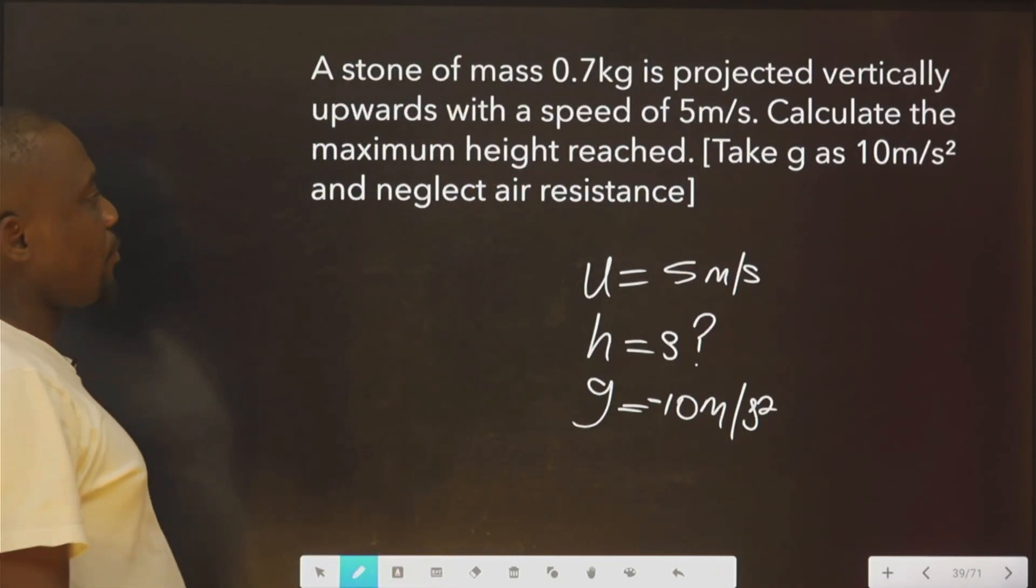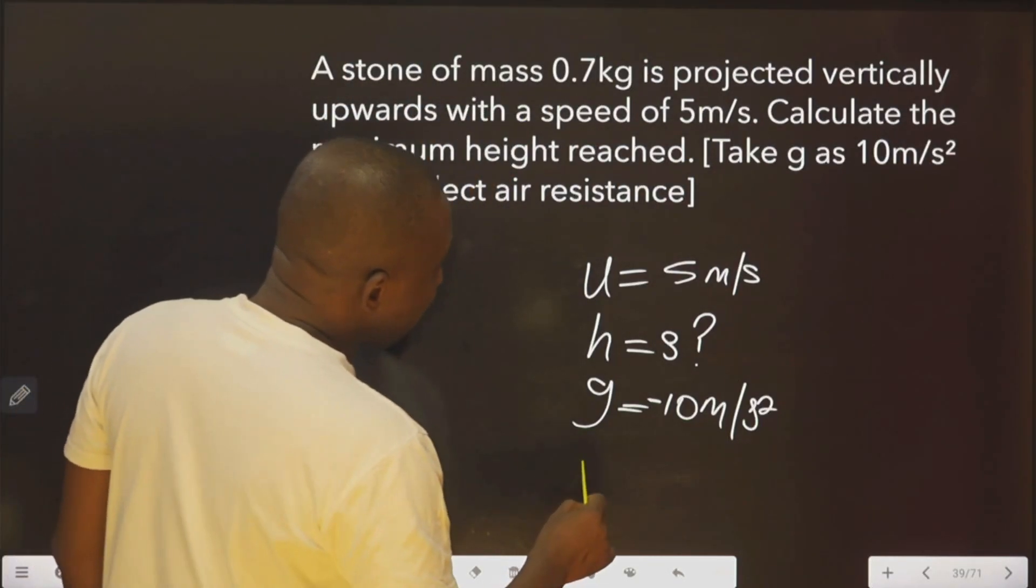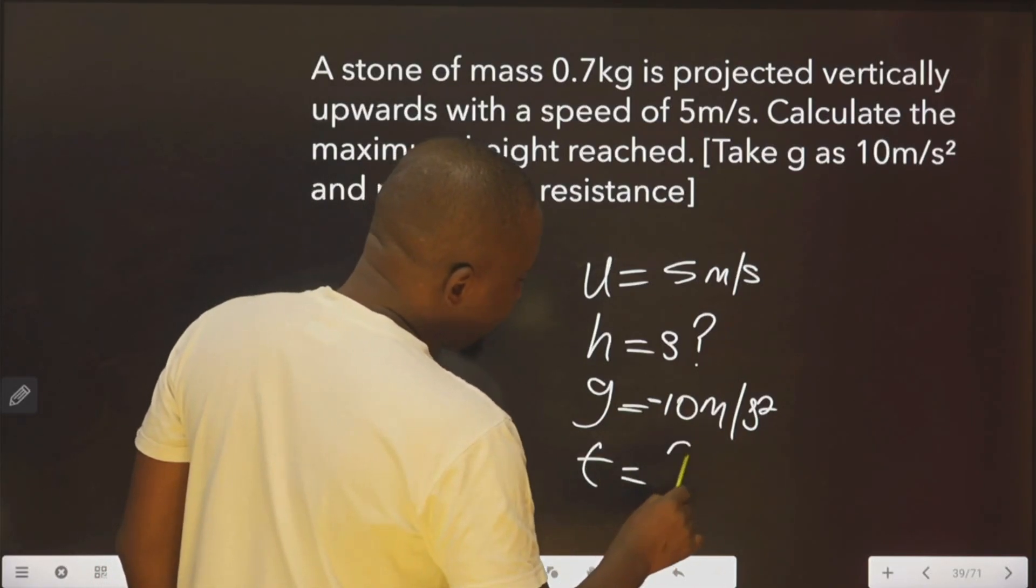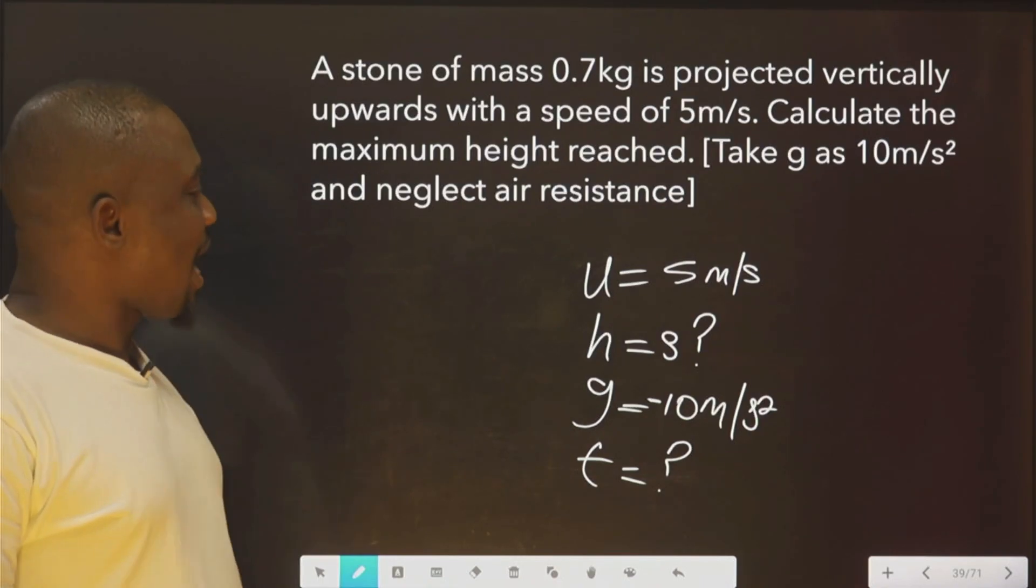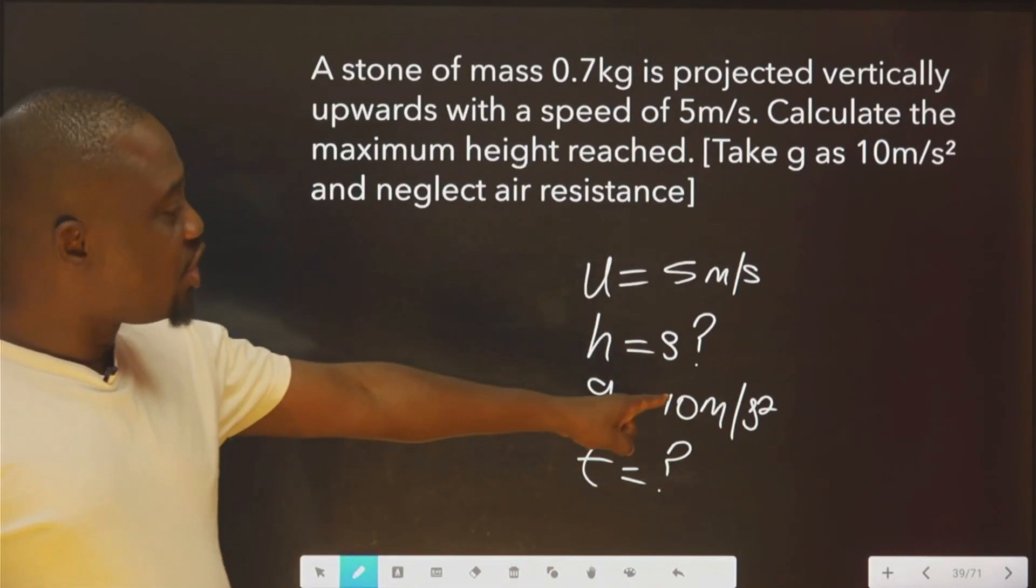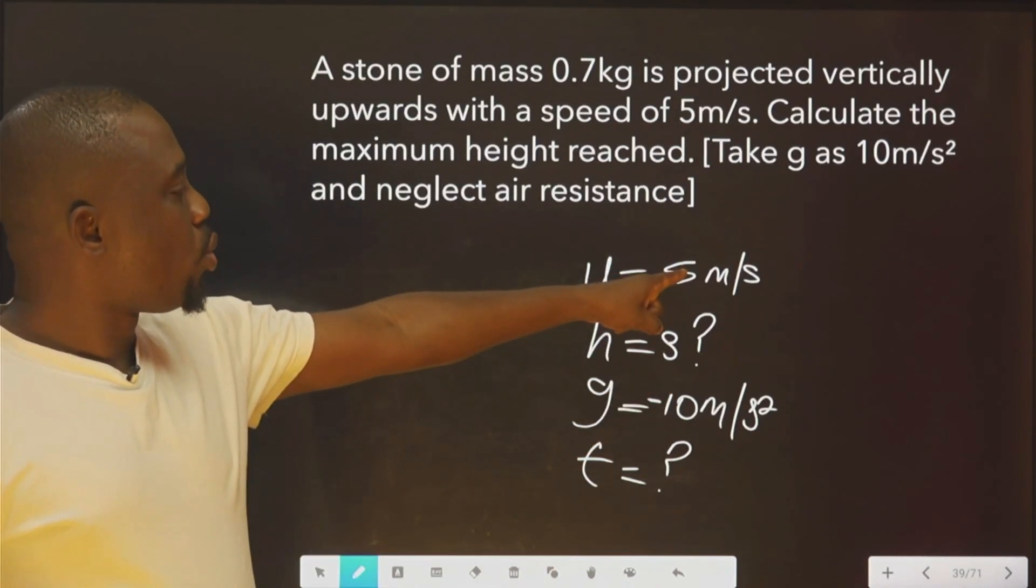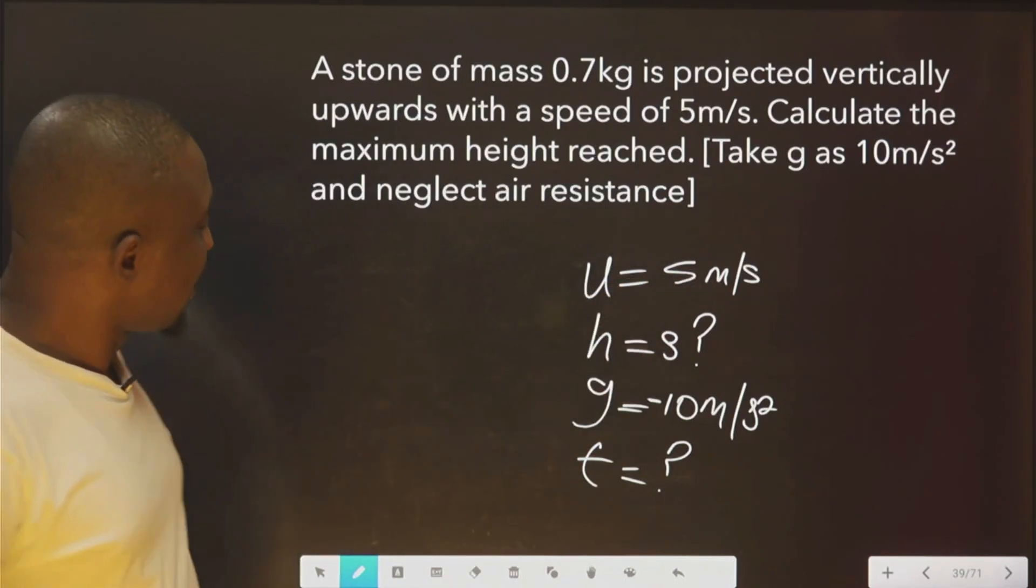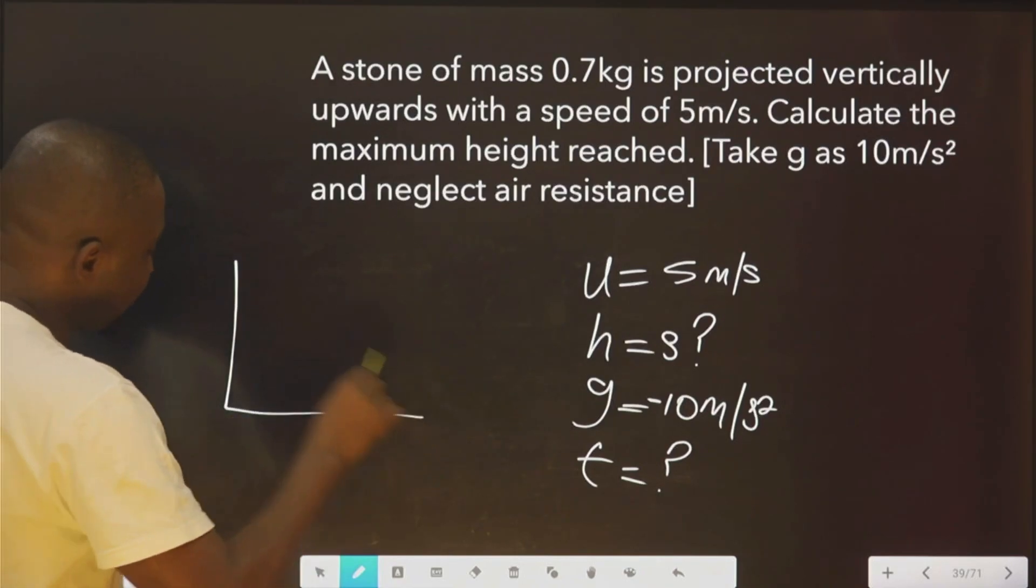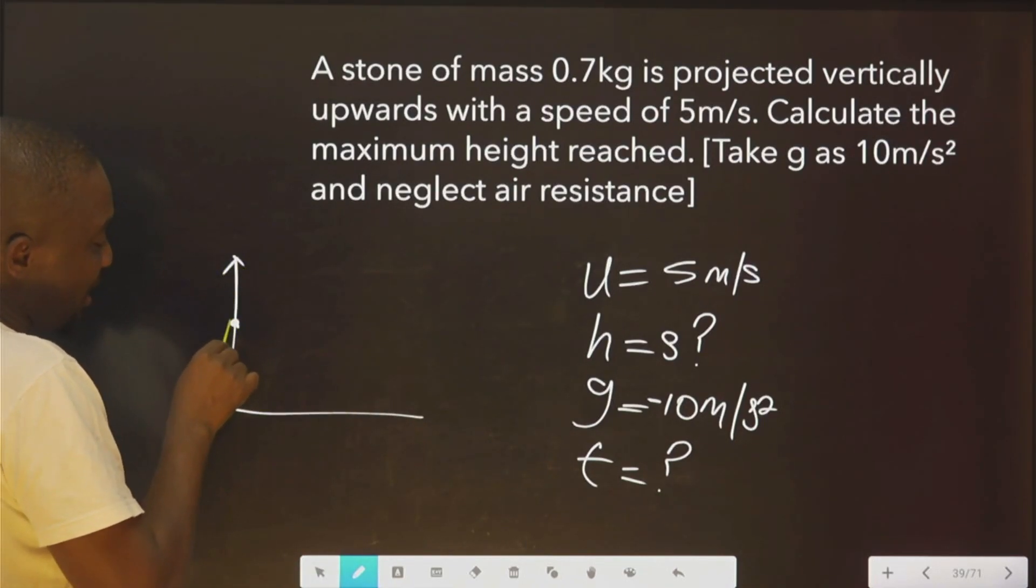Now, we don't know t. The time is not given. We can get t. How do we get t? We know the g. We know the u. We can use that to get the time. If you look at the graph, it started from here to decelerate. Because this is deceleration.